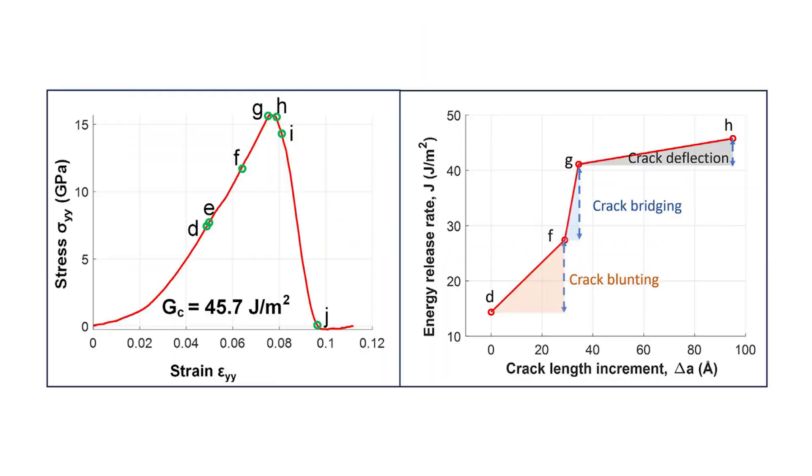Exactly. And these three mechanisms, blunting, deflection, and bridging, together are a major reason MAC is more damage resistant compared to purely crystalline graphene. The random network of carbon atoms, in other words the amorphous region, can better absorb energy because it doesn't let the crack keep running as a single line.